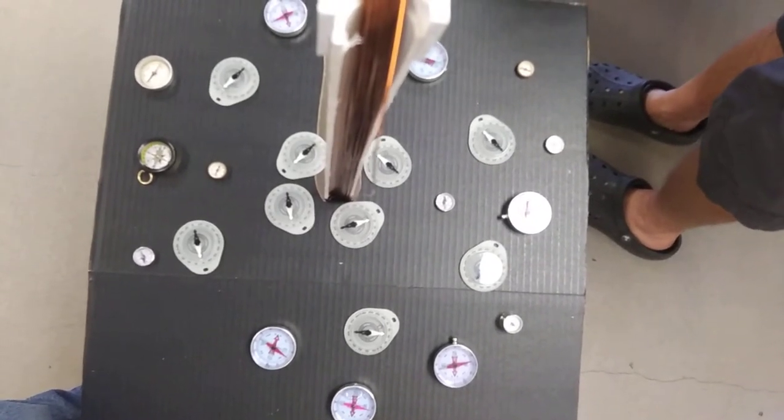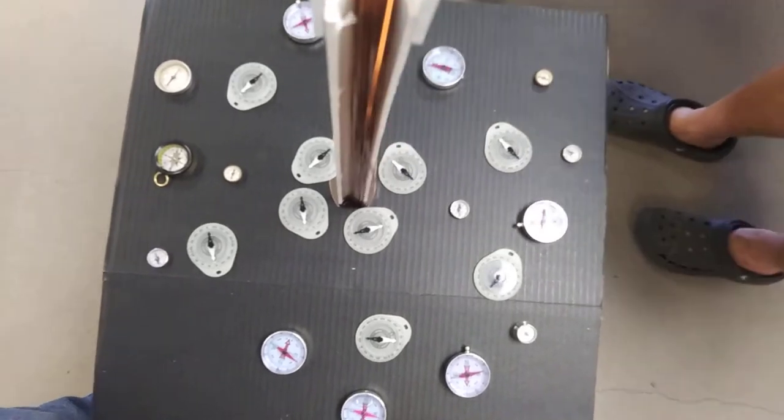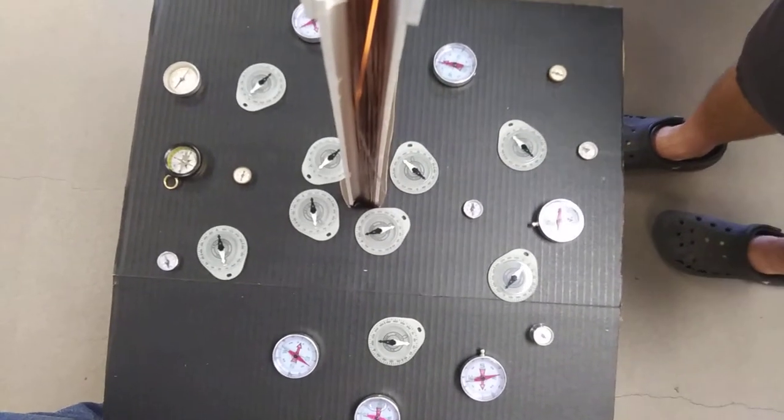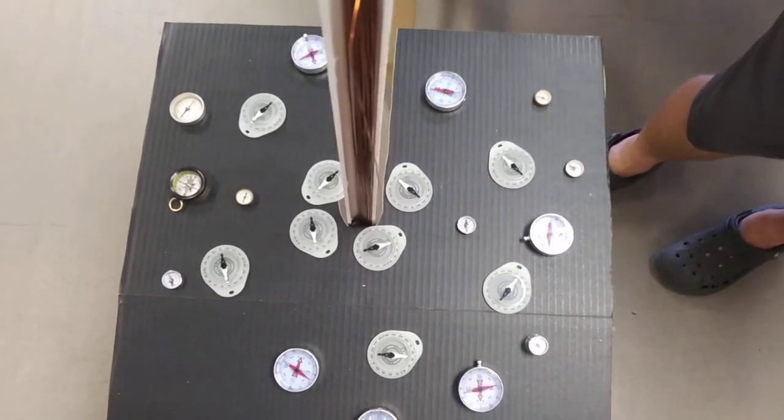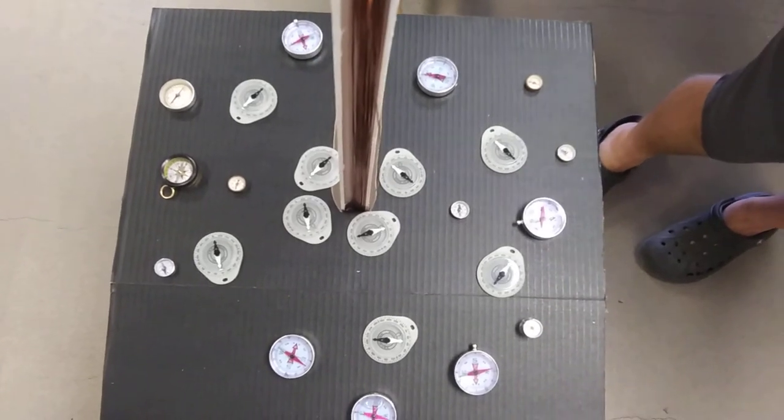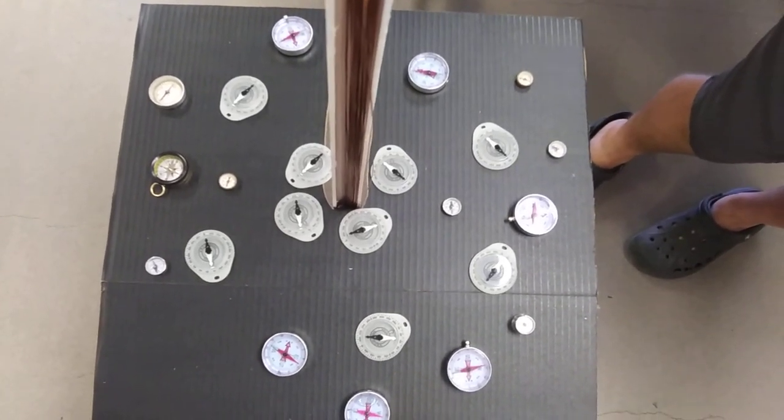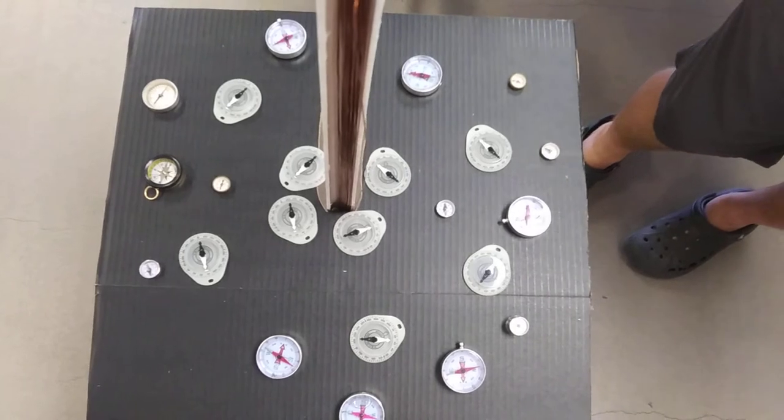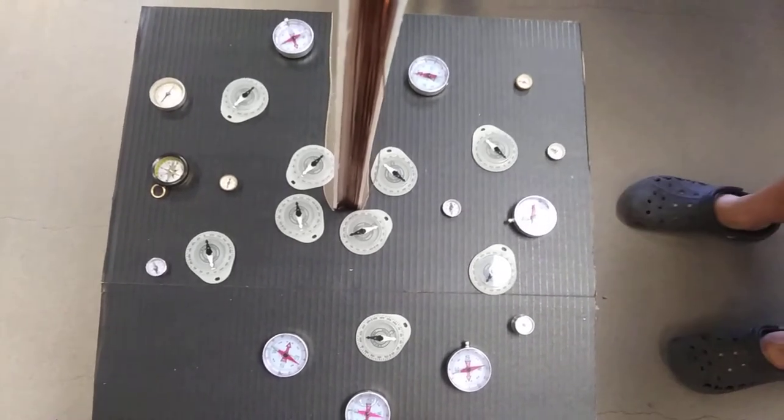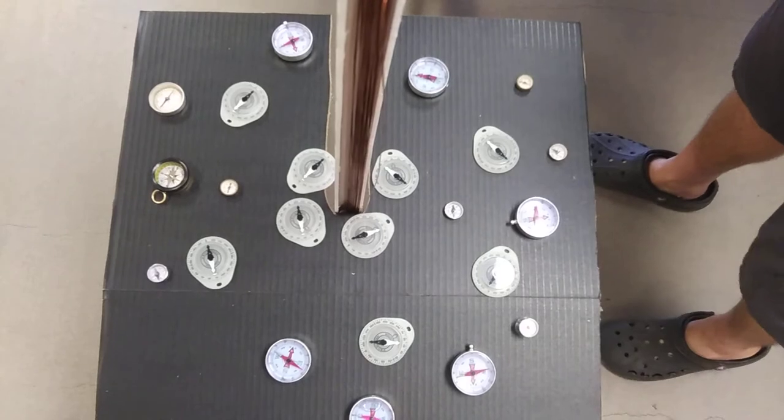Now, why is this so much more dramatic? Again, we have 1.6 amps times 44 turns, whereas last time I think we had 5 amps times 1 length of wire. So we have a significantly larger, at least 10 times the magnetic field here. So that's why this is more dramatic.